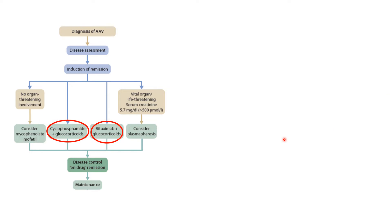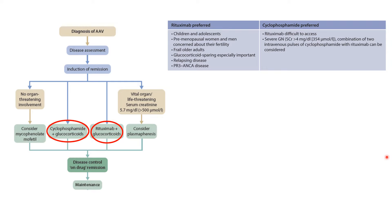When to prefer rituximab over cyclophosphamide? Prefer rituximab in children and adolescents, pre-menopausal women and men (to preserve fertility), frail older adults, when glucocorticoid-sparing is desired, in relapsing disease, and in PR3-ANCA-associated disease. Consider cyclophosphamide when rituximab is difficult to access, in severe glomerulonephritis with serum creatinine above 4, or you can use a combination of two IV pulses of cyclophosphamide with rituximab.